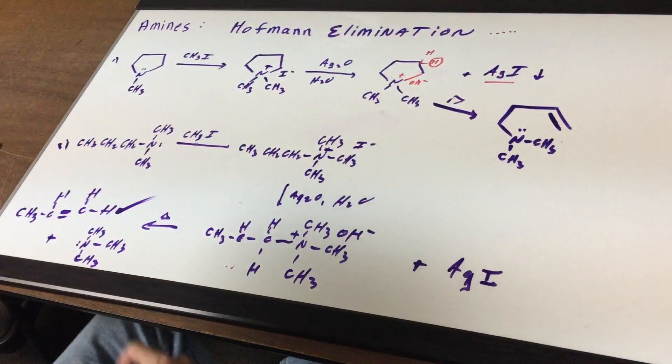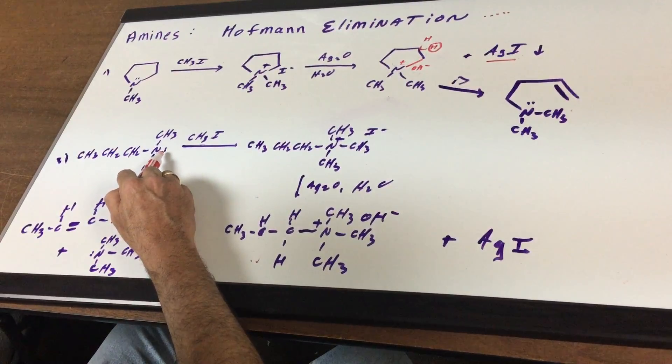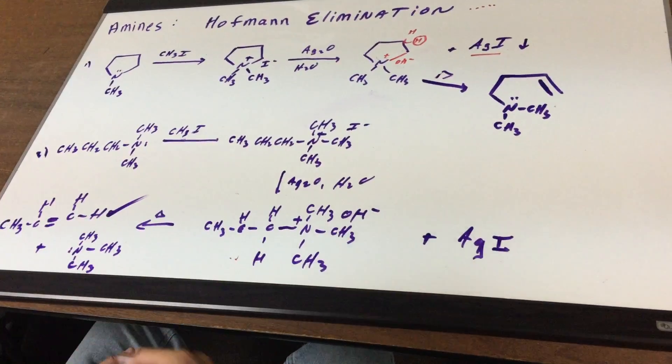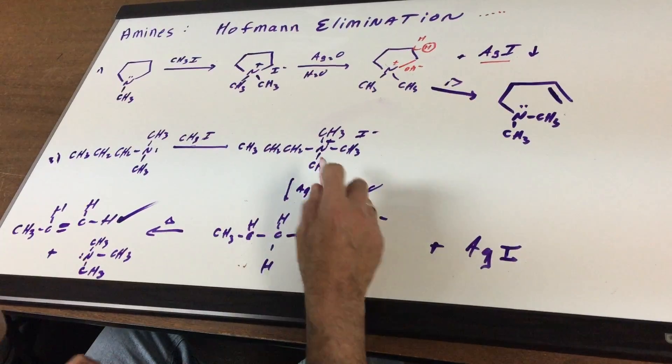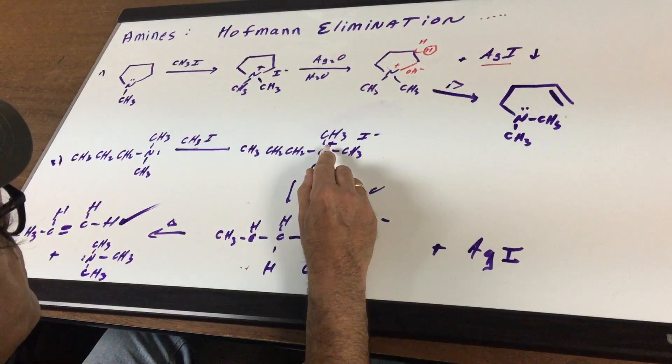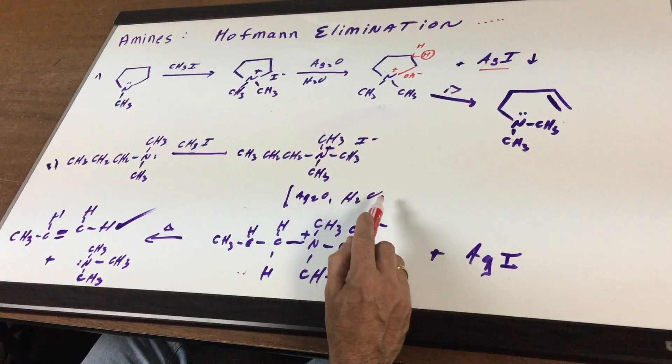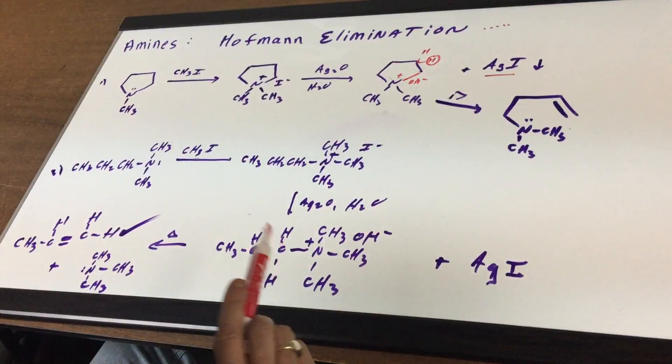What I'm going to do in example number two is I'm going to methylate it again. You do an SN2 and there is your quaternary amine or your ammonium salt. Once I have this, I'm going to then treat it with AG2O and water and that's going to just swap the I- for the OH-.